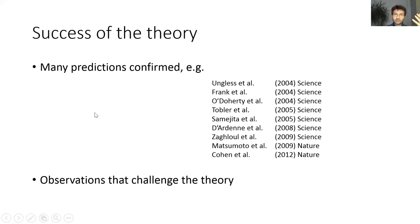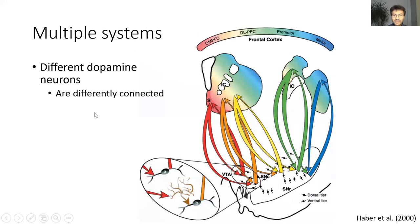However, there are still some observations which are inconsistent with this theory. Although computational neuroscientists would like to think about dopamine as transmitting a single signal — the reward prediction error — throughout the brain, there is actually a diversity of dopaminergic neurons. Dopaminergic neurons are located mostly in two nuclei: the ventral tegmental area (VTA) and substantia nigra pars compacta (SNC). Dopaminergic neurons located in different positions within these nuclei are connected with different parts of the striatum, and different parts of the striatum receive input from different cortical regions.